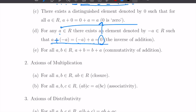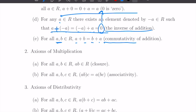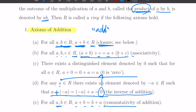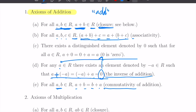And fifth, for all pairs of elements A and B, A plus B equals B plus A. So we can swap the order of addition. This is called commutativity of addition. The previous property is called the inverse of addition. Those are the axioms of addition.